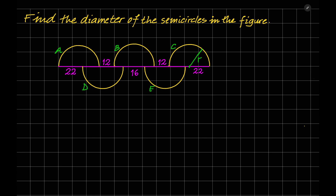As you can see, all semicircles are equal and the figure is symmetric. So we can draw a symmetry line. Let me draw a symmetry line just to simplify the solution. This is the symmetry line of the figure.